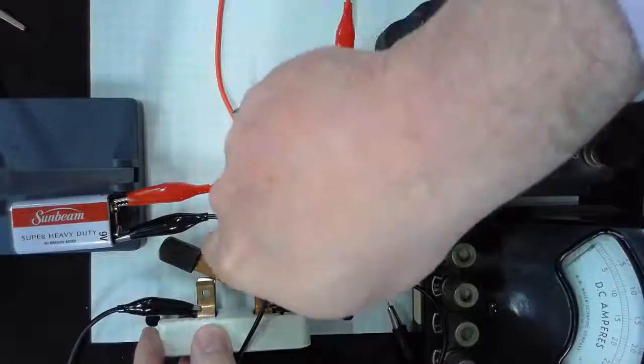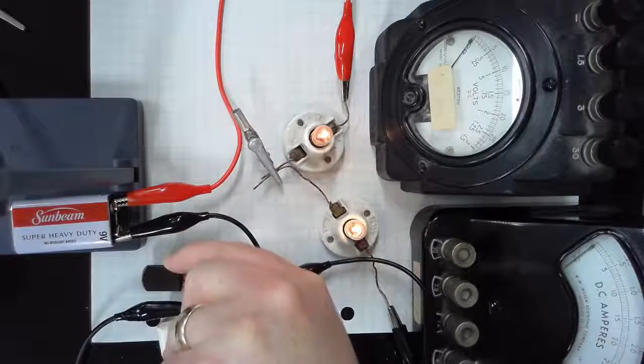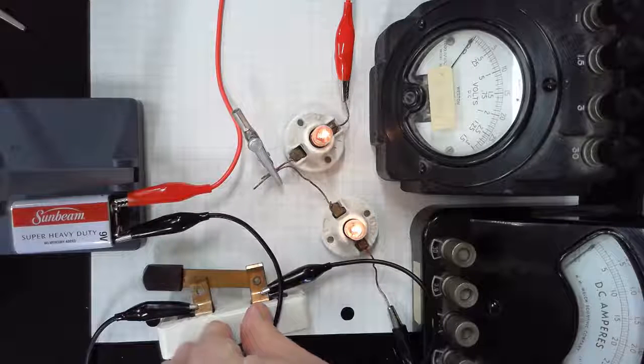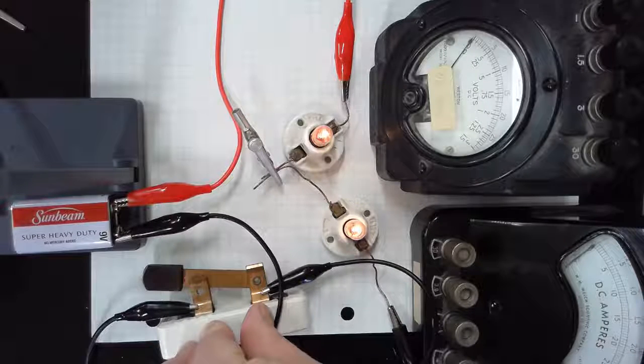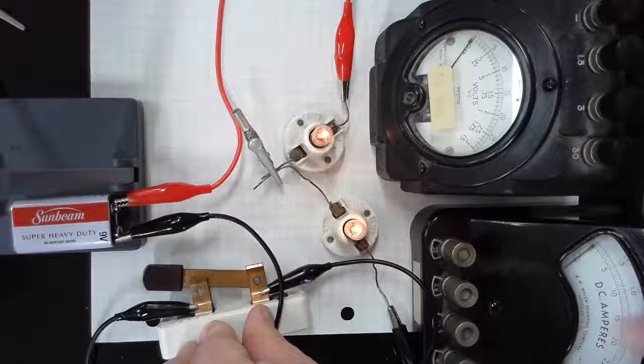So we can see that flipping the switch turns on the bulbs. This is the circuit we're going to use to investigate how you measure both voltage using our voltmeter and current using our ammeter.